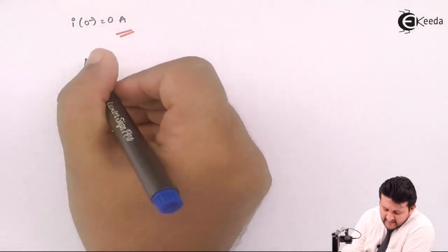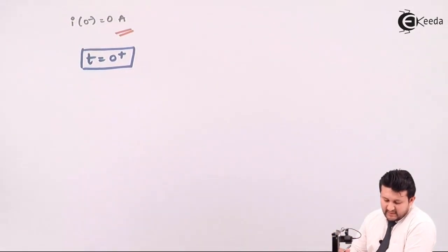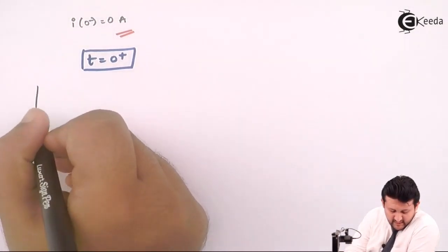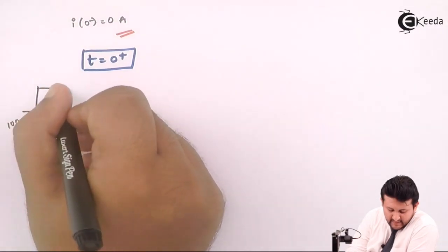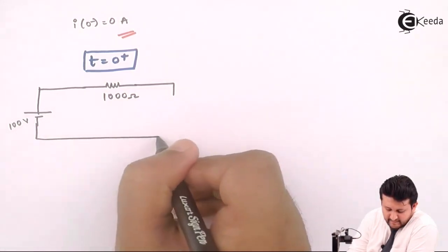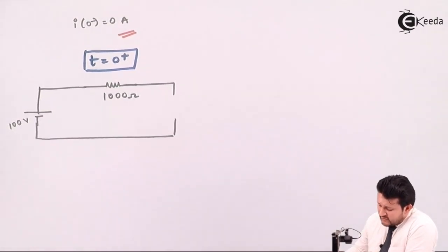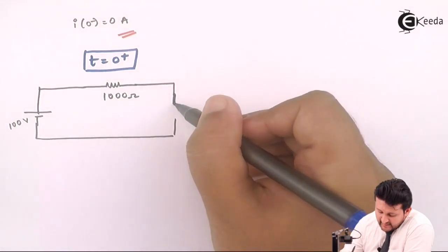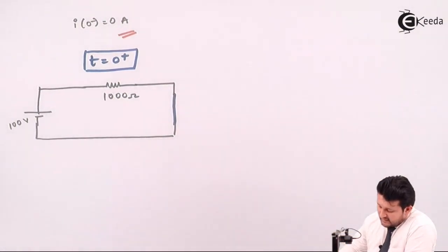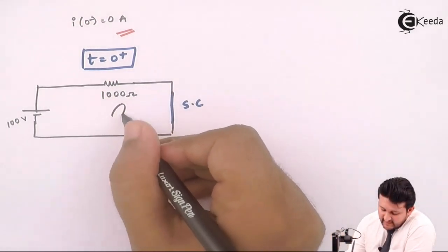The second case is at t equal to 0 plus condition, meaning the switch is closed. The circuit is 100 volts closed in series with a resistance and a capacitor. It is mentioned in the question that the capacitor is uncharged. When a capacitor is uncharged it will try to accept as much current as it can to get charged, so the circuit must be closed. That's why when there is an uncharged capacitor and you close the circuit, it becomes a short circuit.